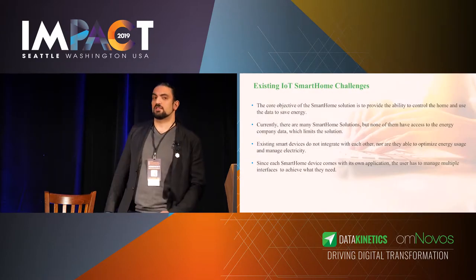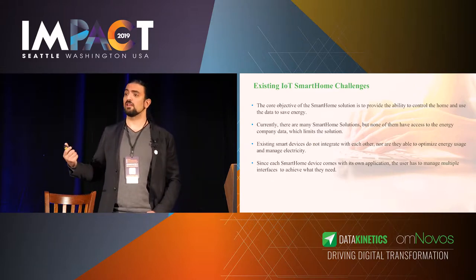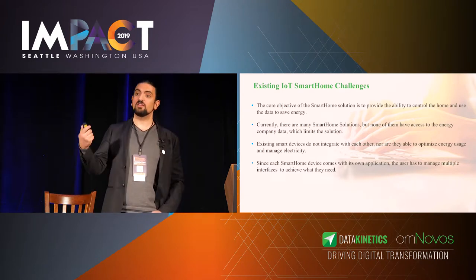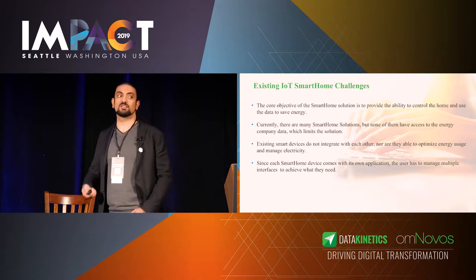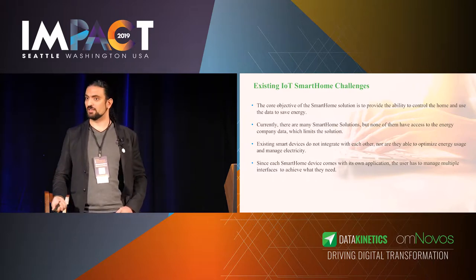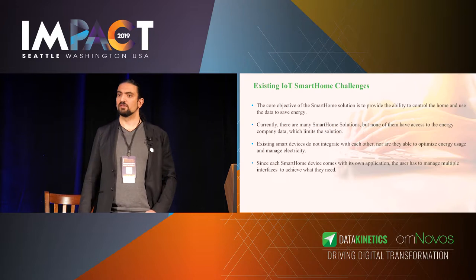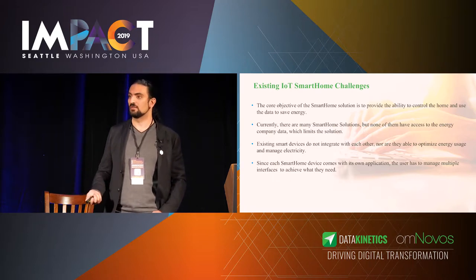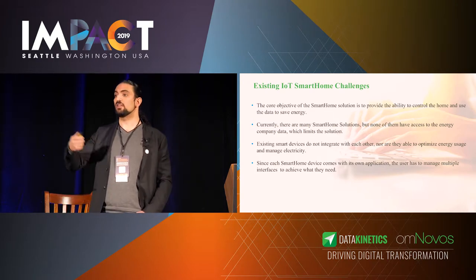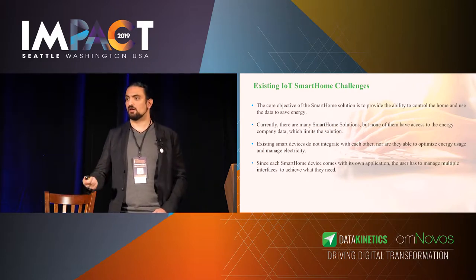In the future, companies will measure their assets based on how many AI models they own, how many AI models they've trained, and how they can use these AI models to drive new business and revenue. That's the language the new CFO will start talking about. When evaluating companies in the future, they'll ask: how many AI models do you have? What can they do? Not how many power plants, not how many sites or buildings do you own. That's the data and AI era we are entering.